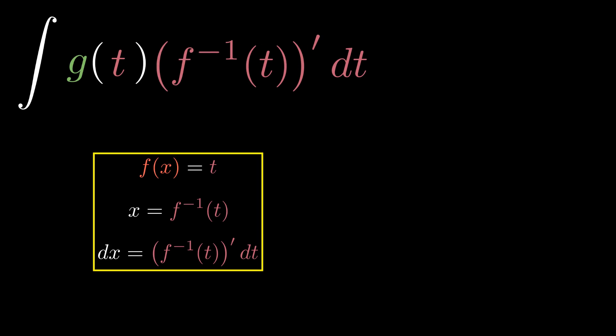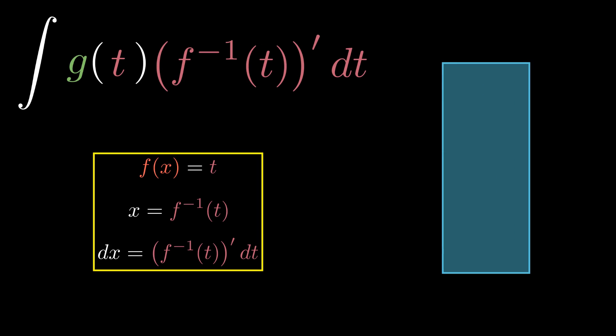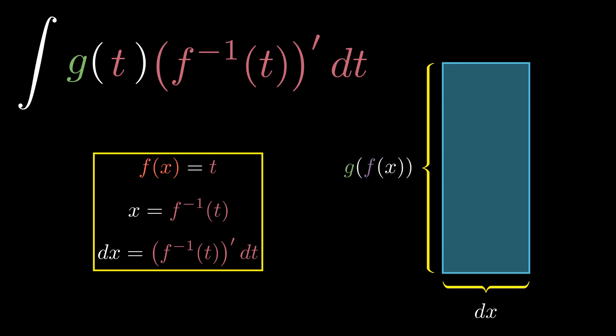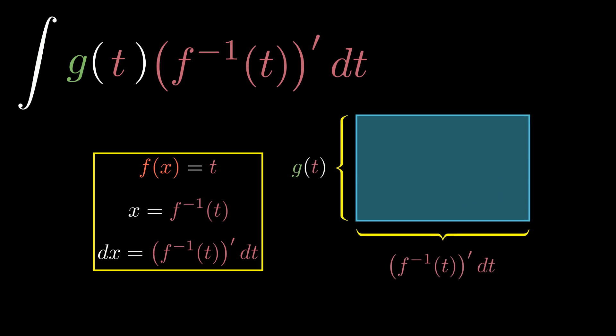When we compute simple integrals, it's sometimes convenient to substitute a piece of our function with a new variable t. But then, also the dx will be transformed into a new function times dt. This is because if we want to keep the same area of a rectangle whose height we have changed, the base will have to be changed accordingly.